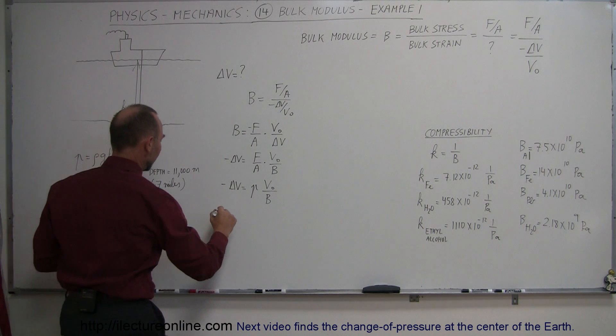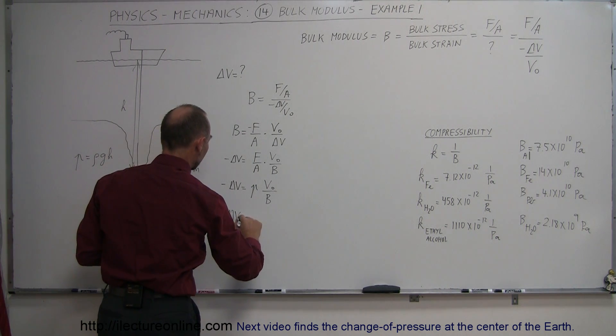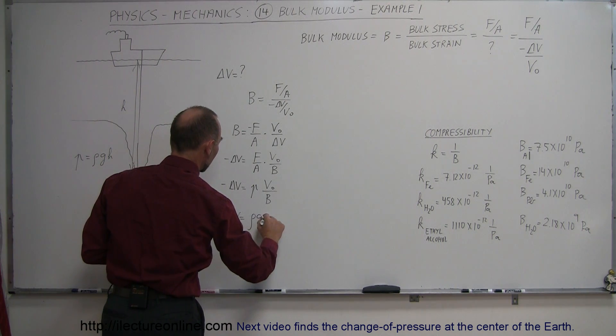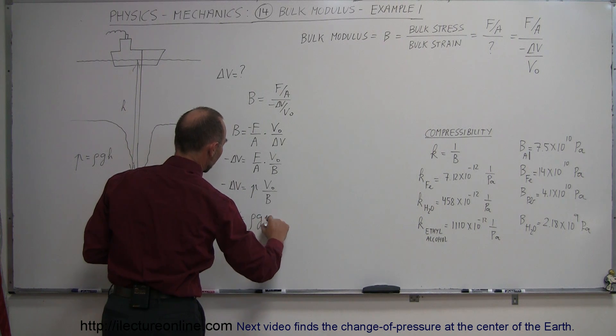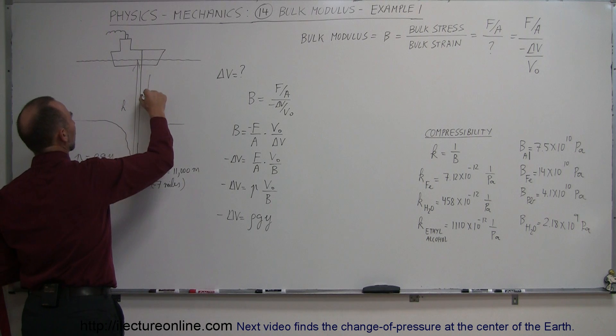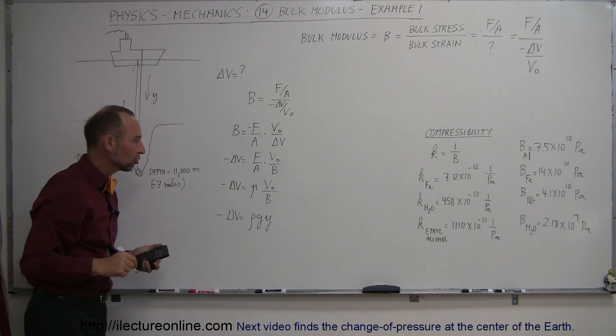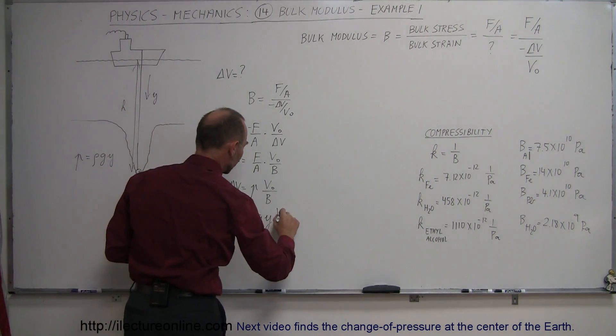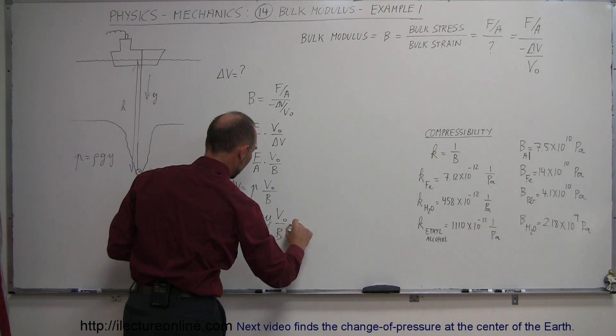So, we're going to plug that in there. So, minus delta V is equal to the density times G times the depth. We'll call it Y instead of H. Maybe that's easier to swallow. So, we go down a depth of Y into the ocean. The original volume divided by the bulk modulus.